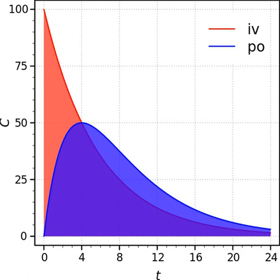F equals 100 times AUC PO times D IV divided by AUC IV times D PO.